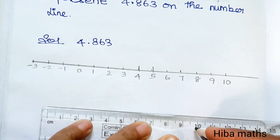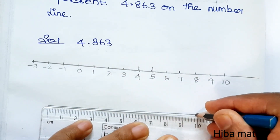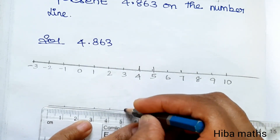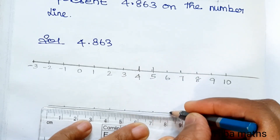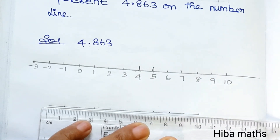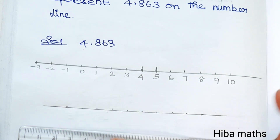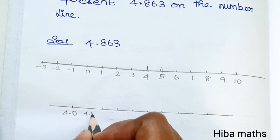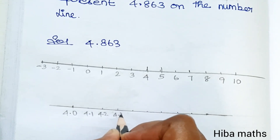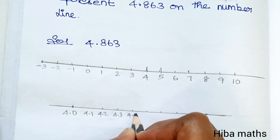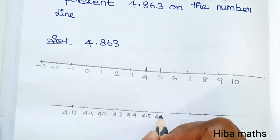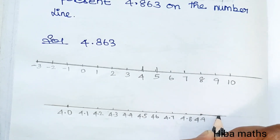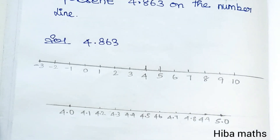Correct? We divide into 10 equal parts. I will extend this line. That's the point — 1, 2, 3, 4, 5, 6, 7, 8, 9, 10. Now, starting from 4.0: 4.1, 4.2, 4.3, 4.4, 4.5, 4.6, 4.7, 4.8, 4.9, 5.0.